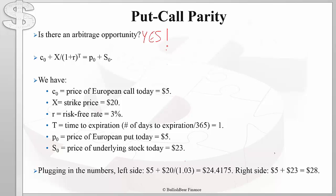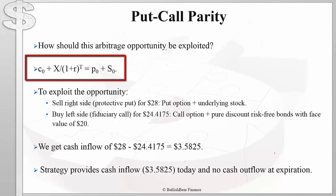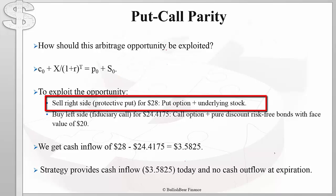But how do we exploit that opportunity? There is only one way to exploit any arbitrage opportunity: we always sell the more expensive portfolio and we always buy the cheaper portfolio. In this case, we saw that the right side was more expensive since it was selling for $28. The right side of the equation is also known as a protective put — it's the put option plus the underlying stock. Since we are selling this, we sell the put option and we sell the underlying stock, and we get $28.